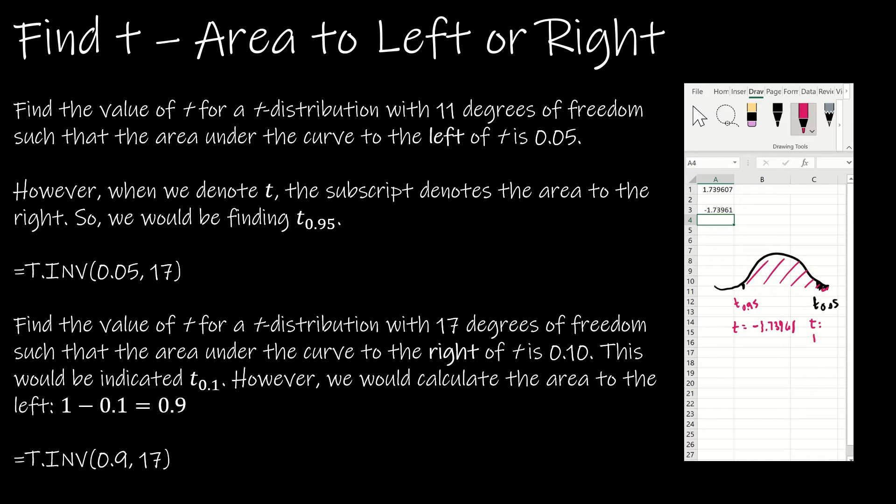We want to find essentially the t-score just like a z-score, but these are going to be opposite. So this is the negative 1.73961 and this is the positive 1.73961. So hopefully that makes sense the difference between those two. The good news is I can always just use the 0.05, or I could have used the 0.95 but then put a negative in front, and notice then I get the negative value.